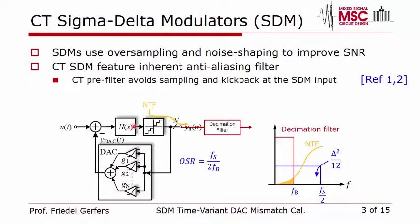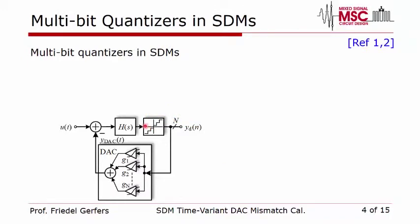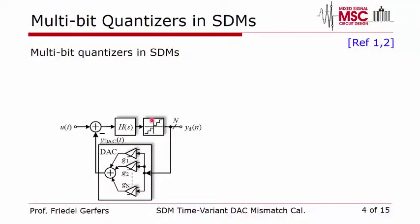Furthermore, a continuous-time Sigma-Delta modulator features an inherent anti-aliasing filter, because in front of the sampler we have a continuous-time filter which acts as an anti-aliasing filter for the whole system, improving the power consumption of an overall receiver. In terms of quantization, multi-bit quantizers have a significant benefit: every additional bit reduces the quantization noise by 6 dB, improving signal-to-quantization-noise performance even further.